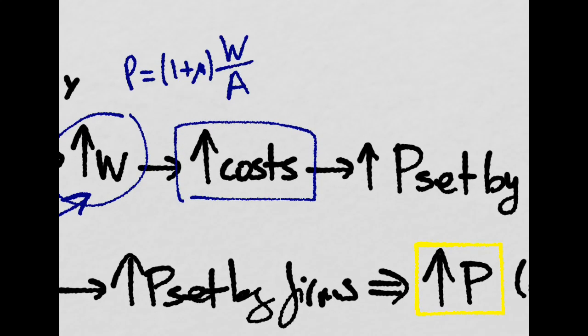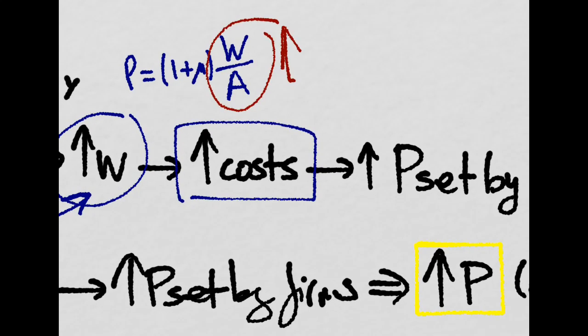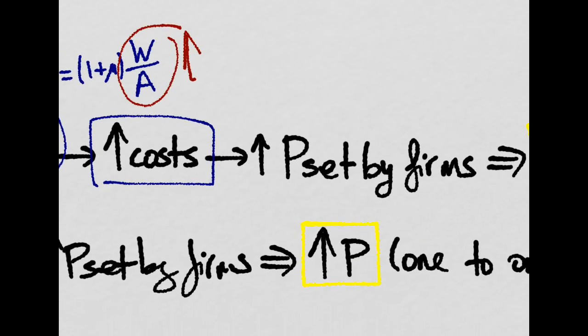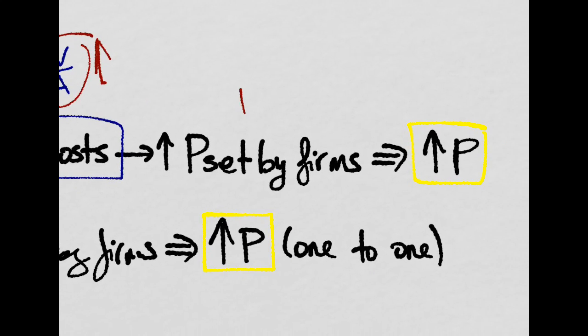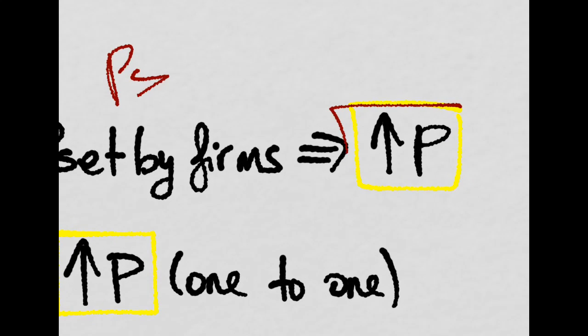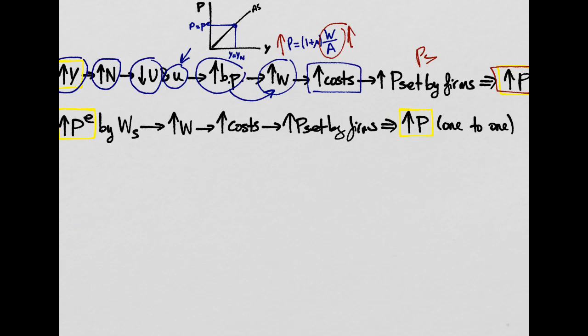Remember, this side will be higher. So prices set by firms from the price setting, they will be higher. And that will overall just increase the price level. So that's the reason why when output in the economy increases, that brings an increase in prices, that is, inflation.